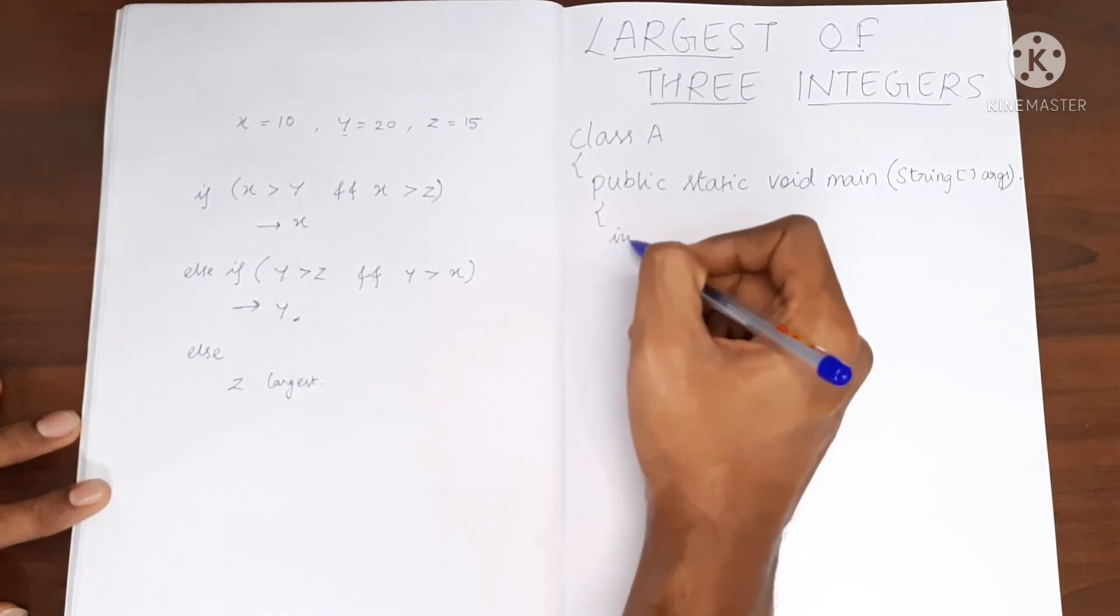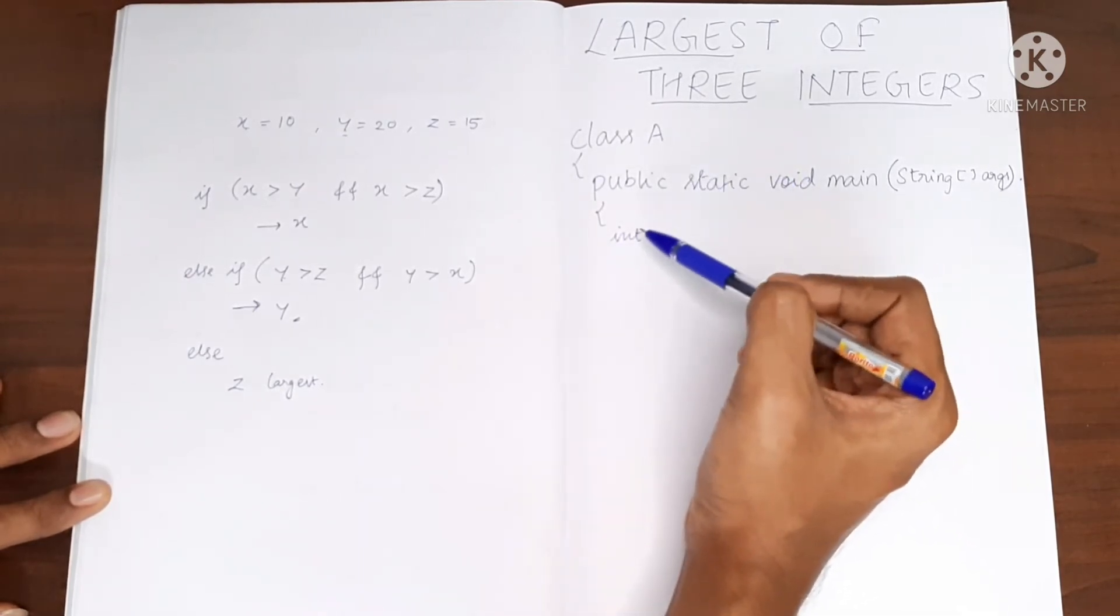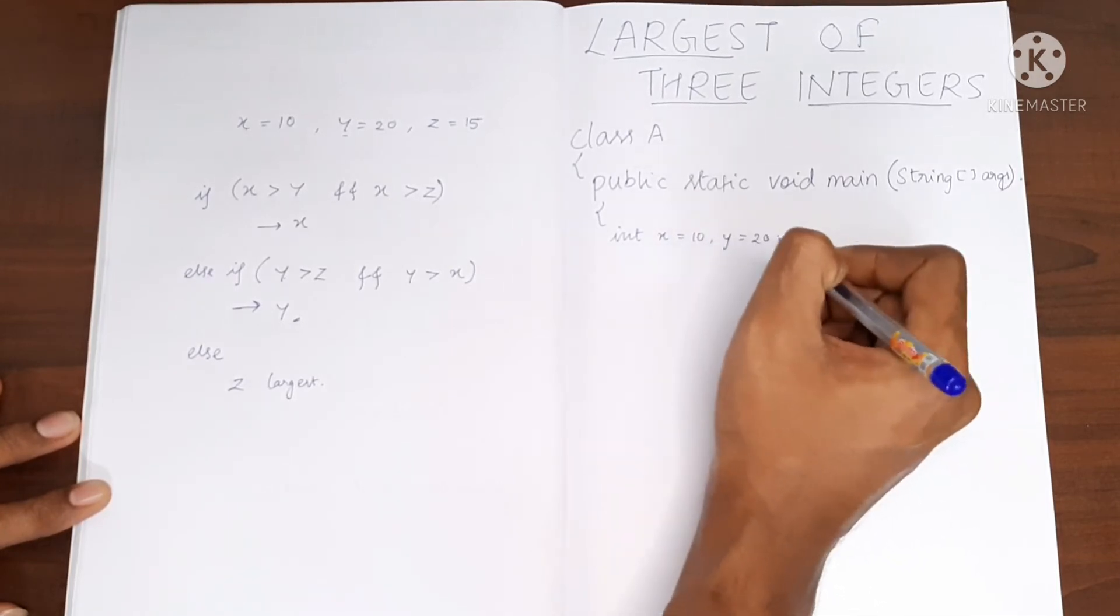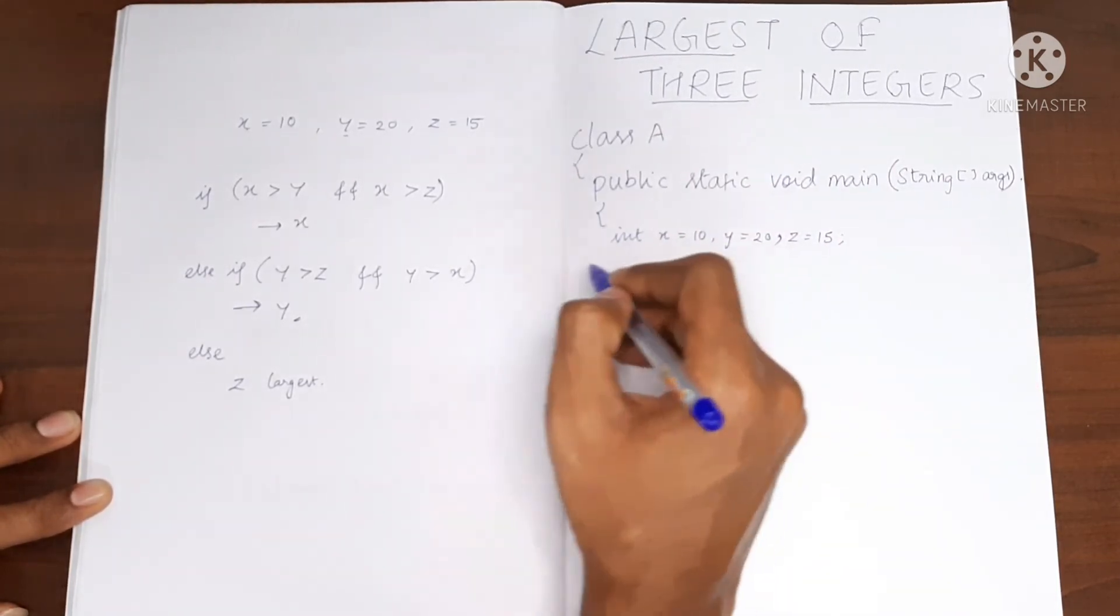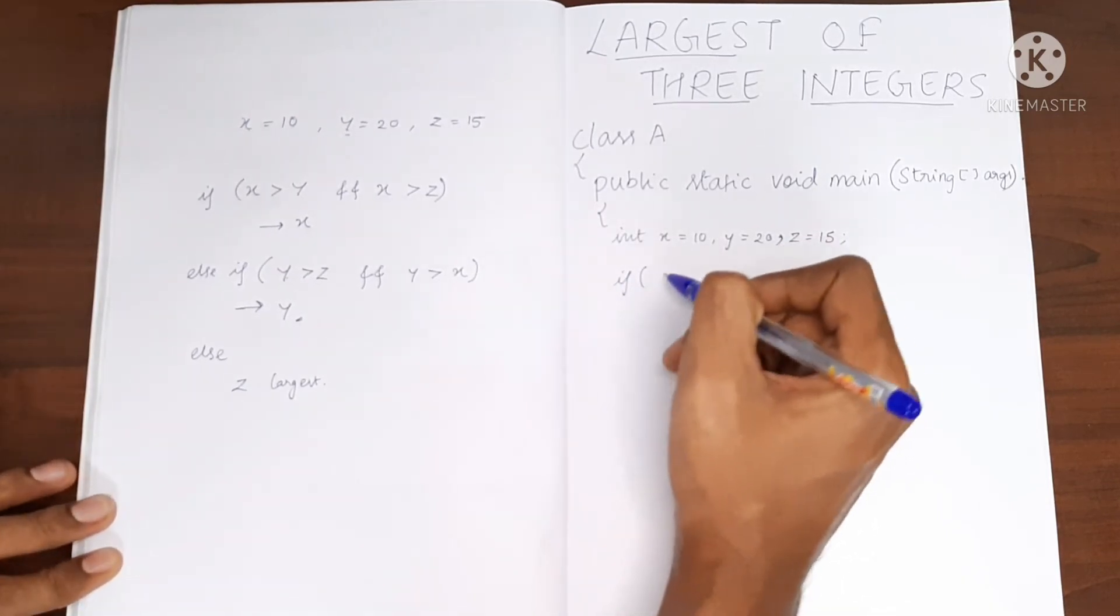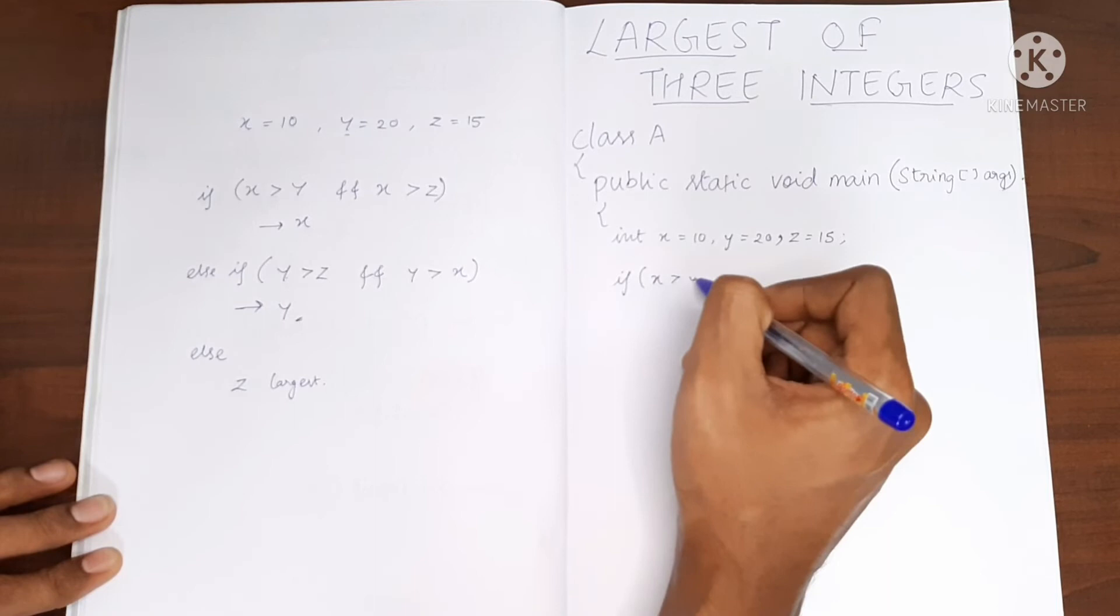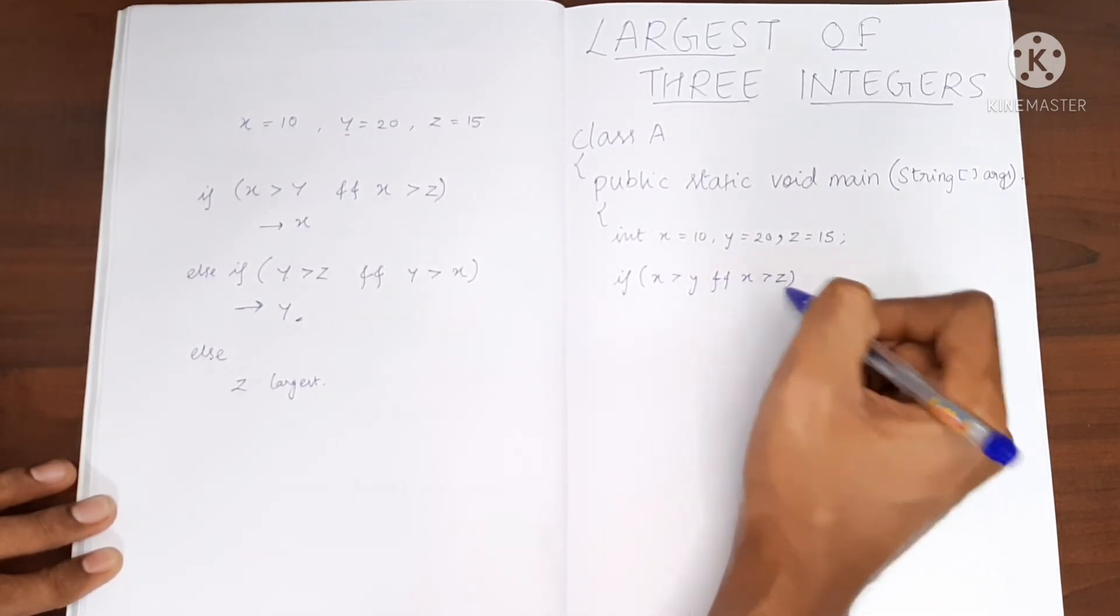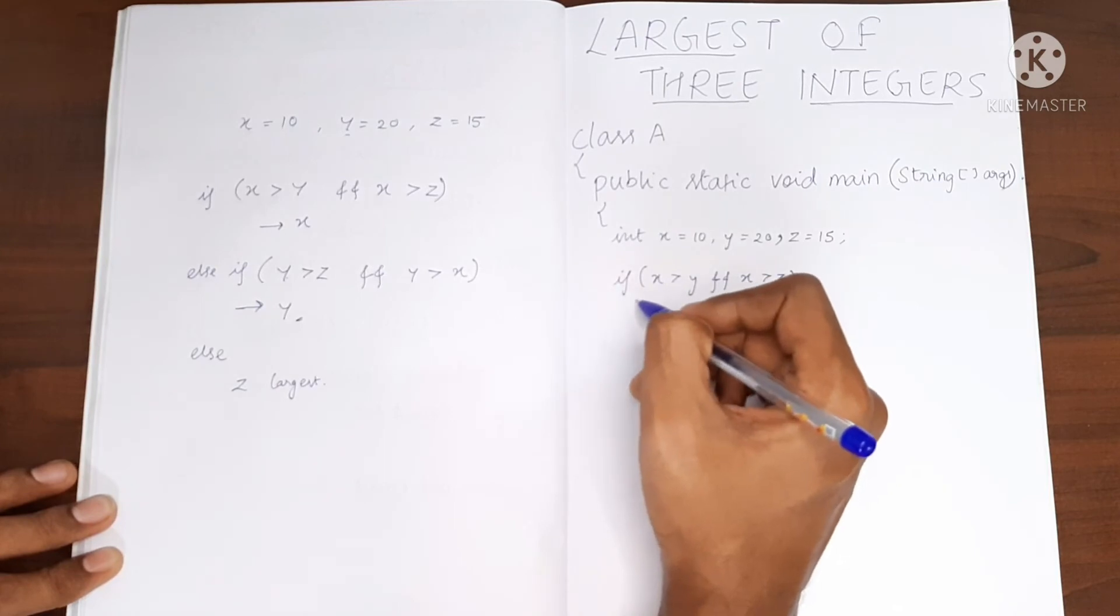We will have three integers, or they can be float values as well. So we have three values. All we have to do is use if: if x is greater than y and x is greater than z, we will print that.